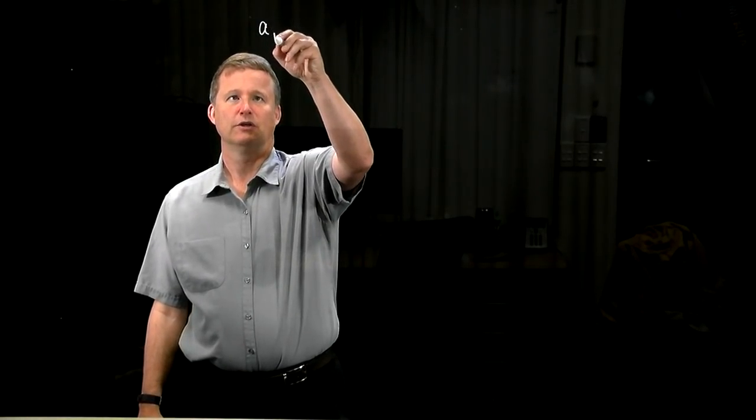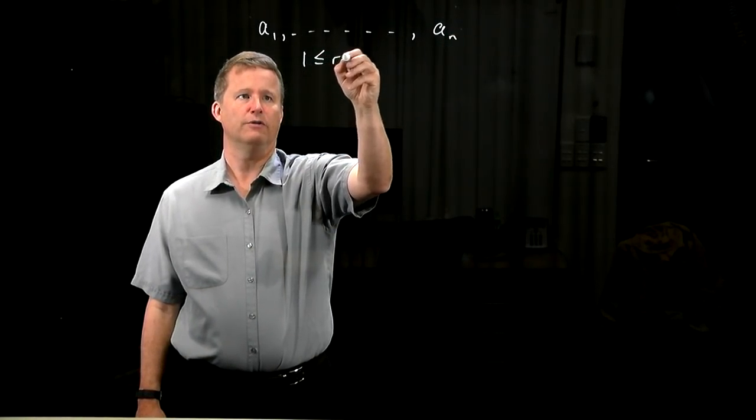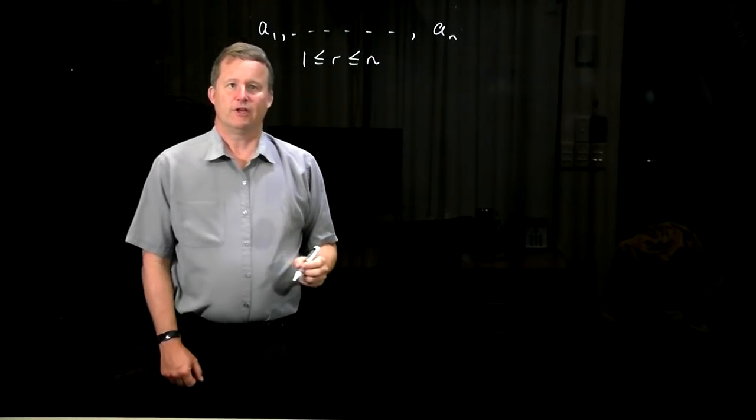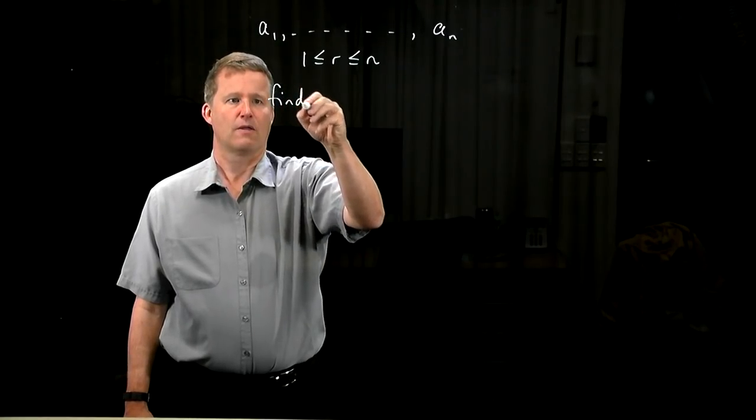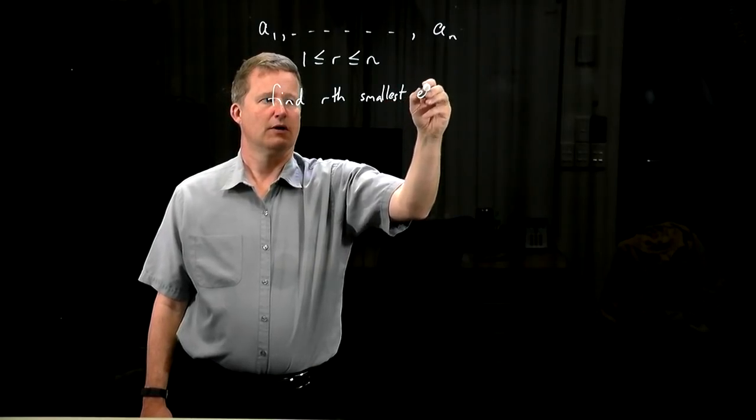During our analysis of sorting algorithms, we spent quite a while talking about selection sort and heap sort, both of which are related to the idea of selection. Now I want to talk about that problem itself in detail. The general problem of selection is as follows: you have an input list and you also have an integer r, say between one and n - let's call that the rank - and the idea is to find the rth smallest element.